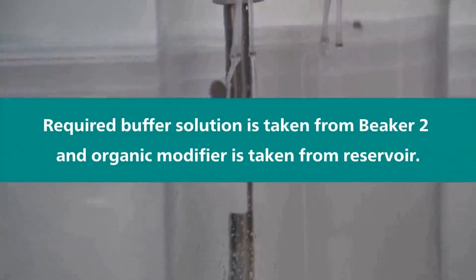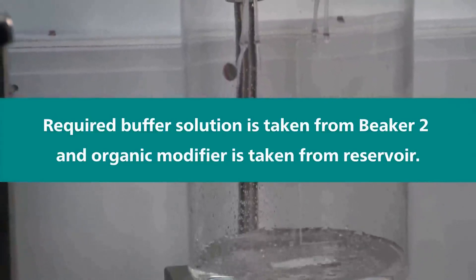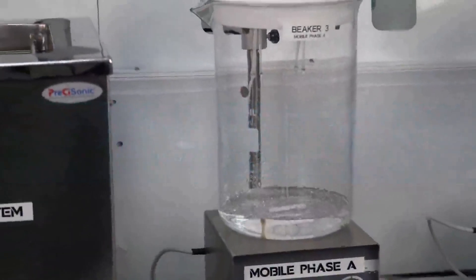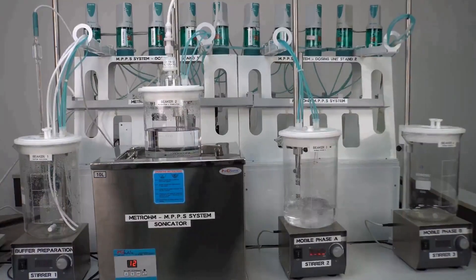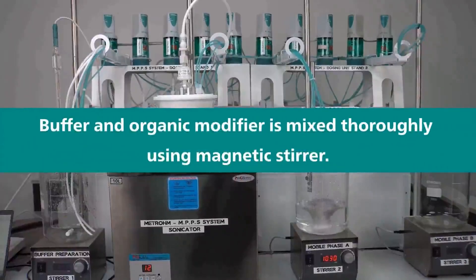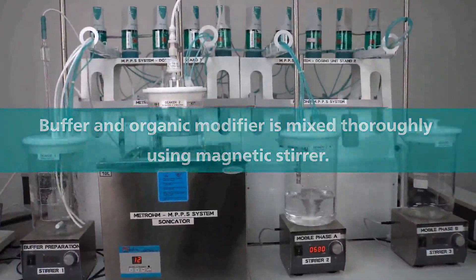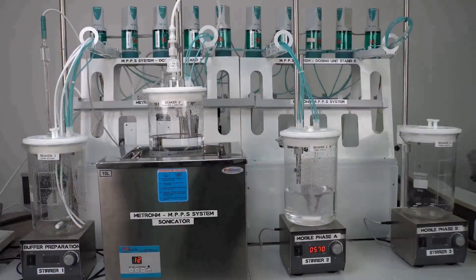The required amount of buffer solution is taken from beaker number 2 which is mixed with respective organic modifier to prepare the mobile phase solution. The buffer solution and the organic modifier is mixed thoroughly using the magnetic stirring bar.